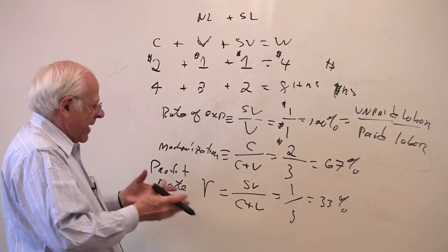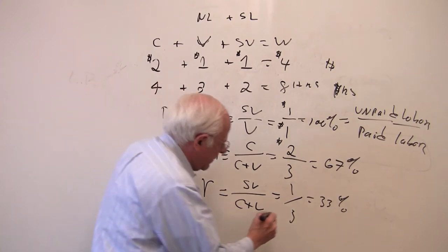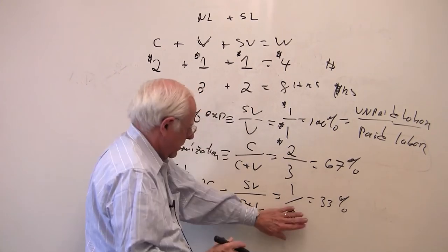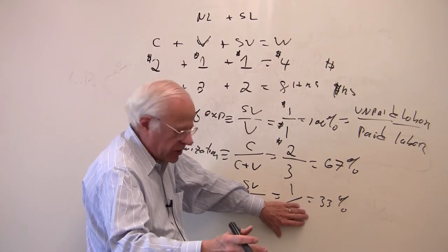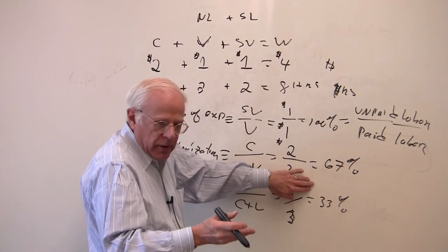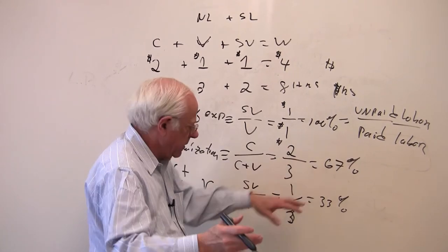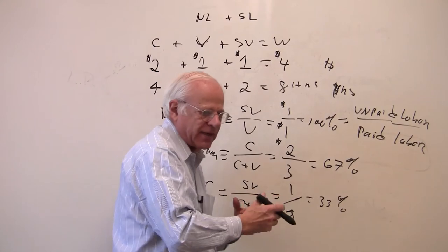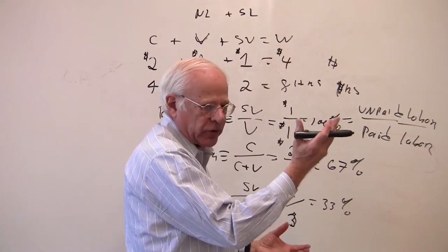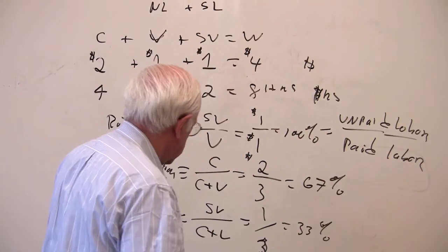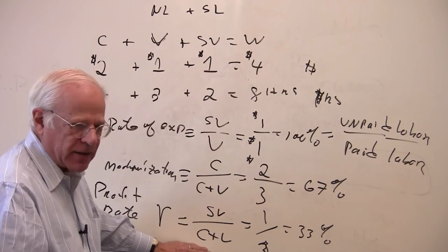So if the capitalists is successful, the capitalists would be putting in costs, C plus V, production costs, and getting out a higher and higher numerator. The profit rate would be going up. It's an index of success if that rate of return to the capitalists is increasing. So these are your three famous indices.